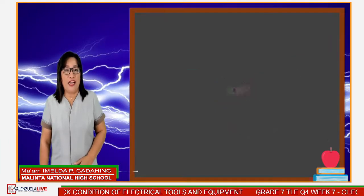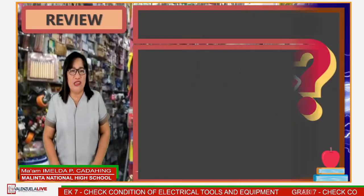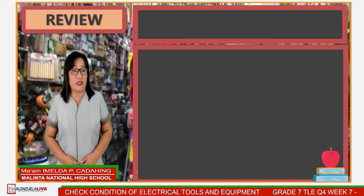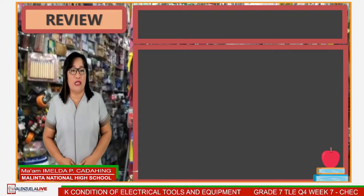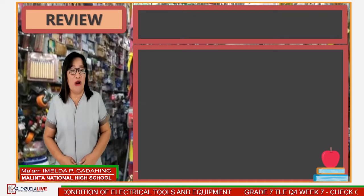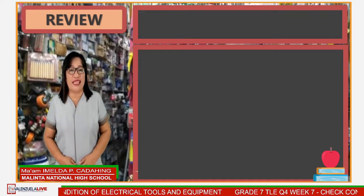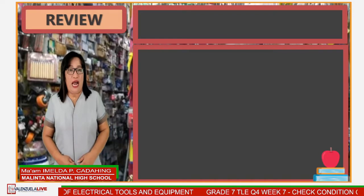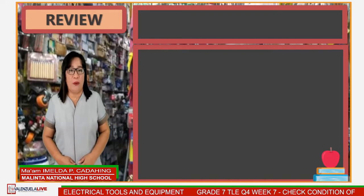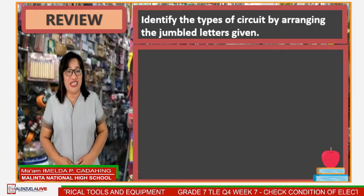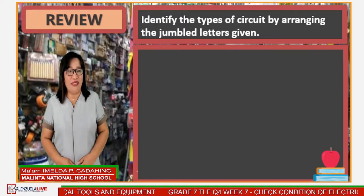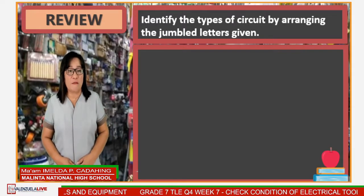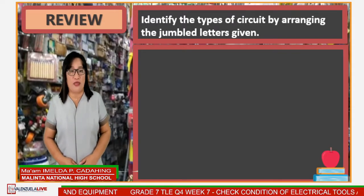Are you ready? Do you still remember the discussion last week? I'll find out as we have a recall of our previous lesson through this warm-up activity: Arranging Jumbled Letters — arranging a set of jumbled letters to form the type of circuit each picture represents.